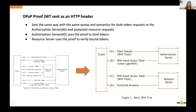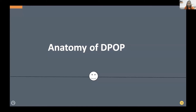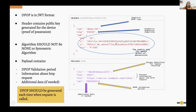DPoP provides an extra validation layer to ensure the access token is used by the correct client. DPoP is a JWT with three sections: header, payload, and signature. To generate a DPoP, the client must generate a public-private key pair, which is unique to that client — this is how the client is identified.